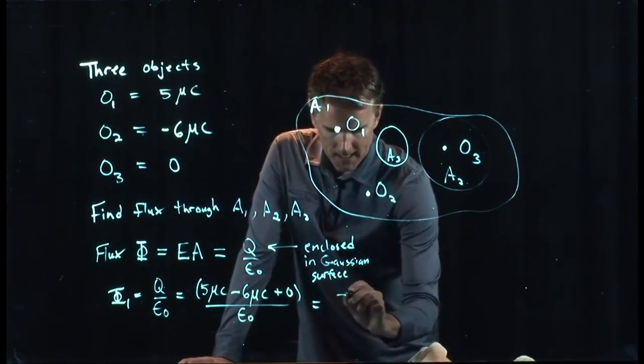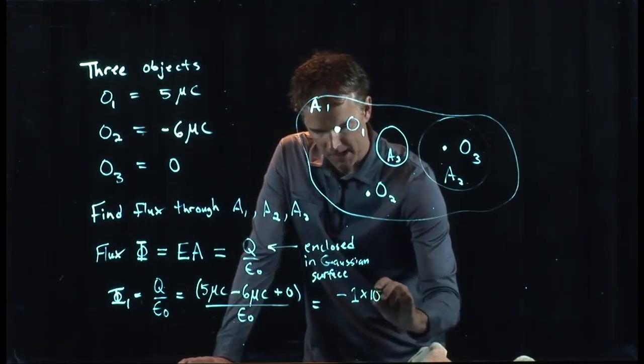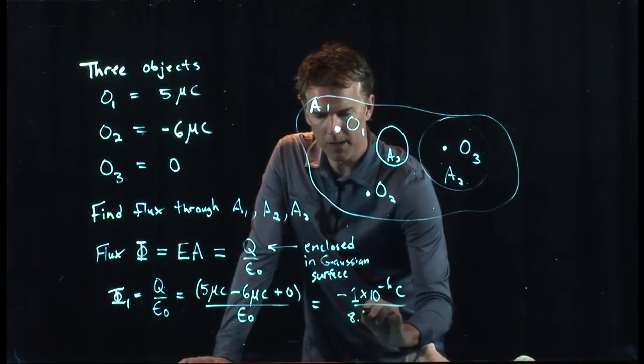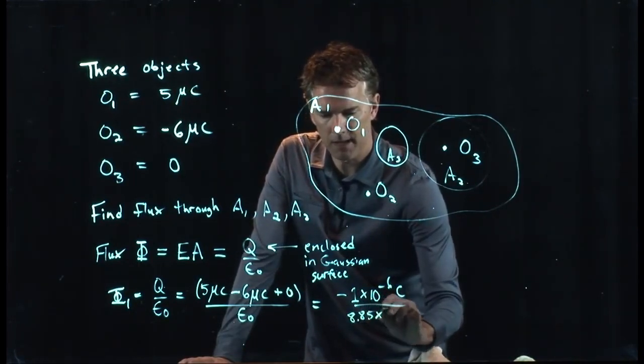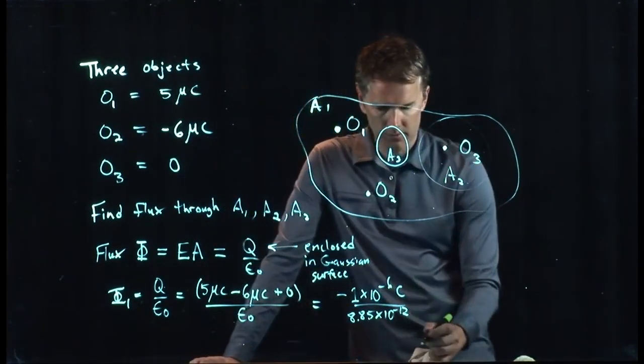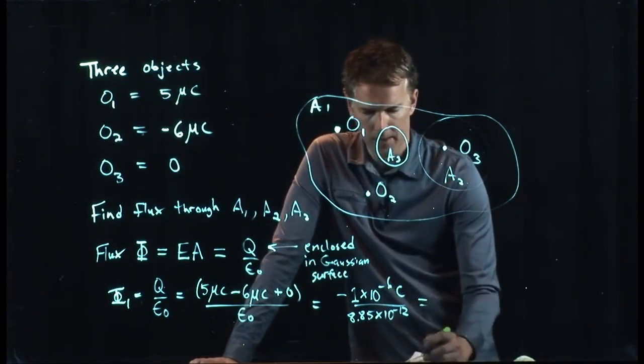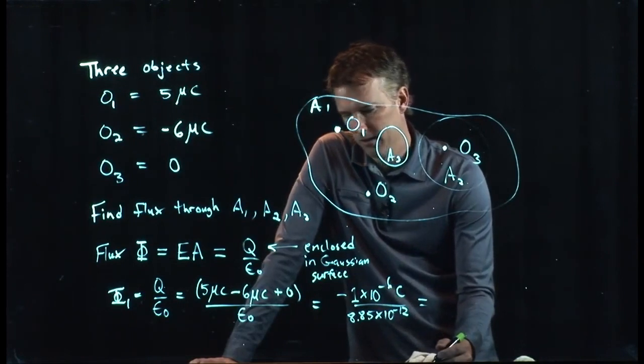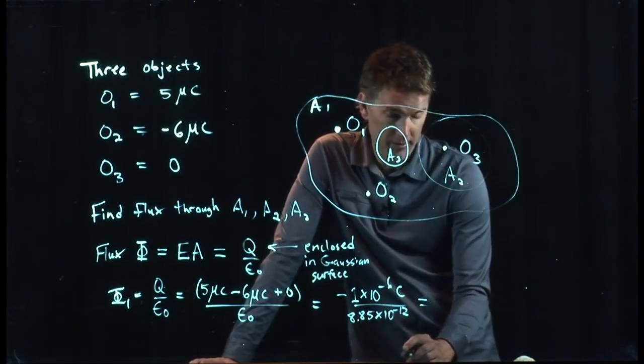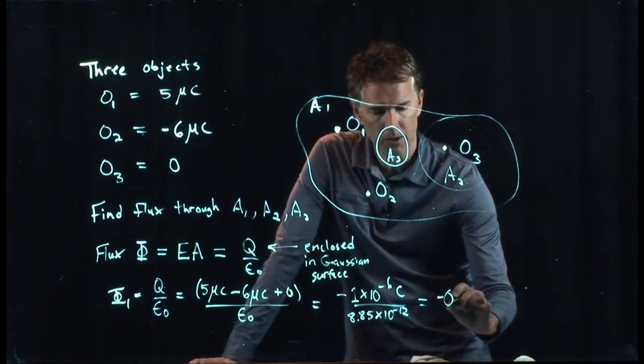And so you get minus 1 microcoulombs, which is times 10 to the minus 6 coulombs, divided by epsilon naught, which we said was 8.85 times 10 to the minus 12. And you can put on the units there if you want. And so what do we get? Somebody run that in your calculator and tell me what you get. It's about 1 over 9, a little bit more. 1 over 9 would be 0.11, but it'd probably be more like 0.12.